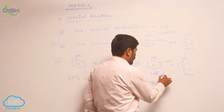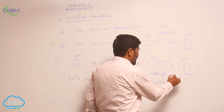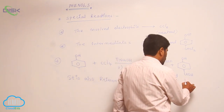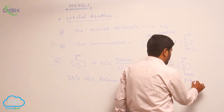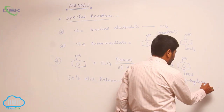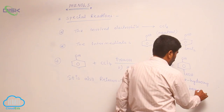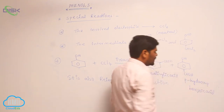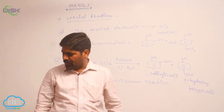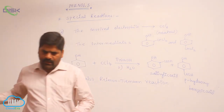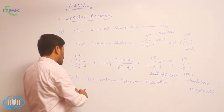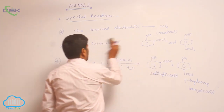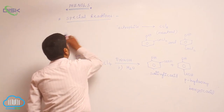When phenol reacts with carbon tetrachloride in the presence of a base, it forms salicylic acid (ortho-hydroxybenzoic acid) and para-hydroxybenzoic acid. These are also products of the Reimer-Tiemann type reaction.